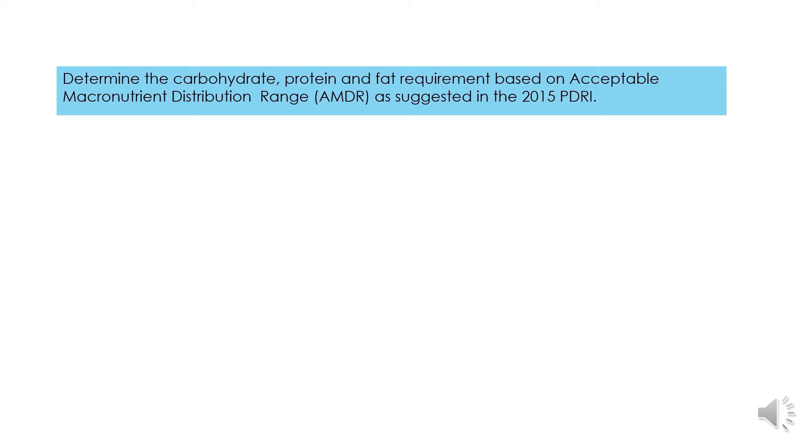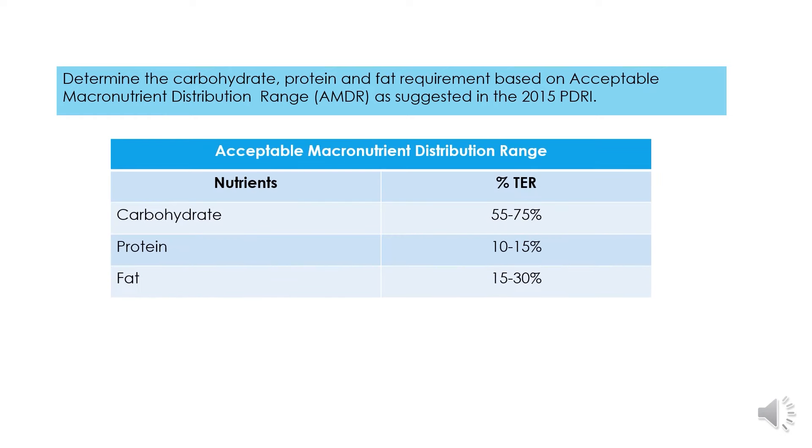To make a diet prescription we will first determine the carbohydrate, protein and fat requirement based on Acceptable Macronutrient Distribution Range or AMDR as suggested in the 2015 PDRI. This is a table for AMDR, so this means that your diet should be composed of